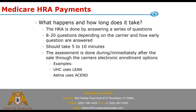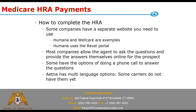UHC uses Lean, so when you're doing enrollments through their app you can conduct the HRA through the Lean app. Same thing with Aetna — they use Ascend, and through Aetna's Ascend app you can conduct the HRA as well. Different companies handle it differently. Some have websites that you can do it through. Humana and WellCare are examples of that — they have websites where once you complete the application, you then go to a separate site to conduct the HRA.